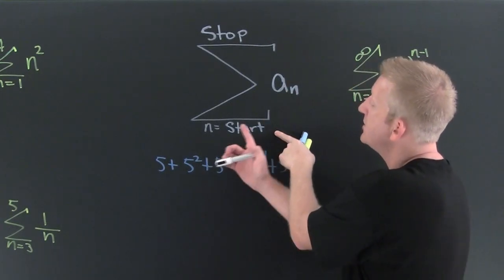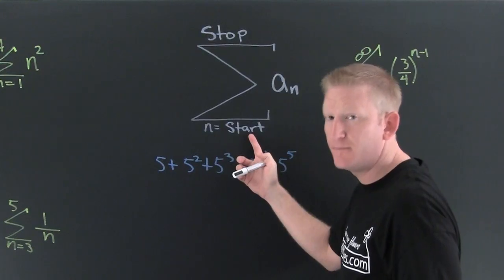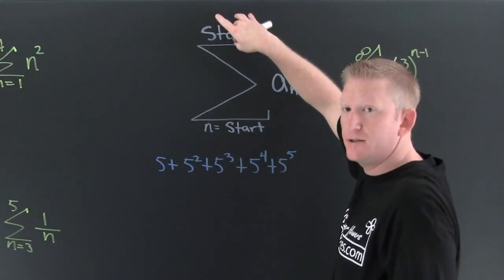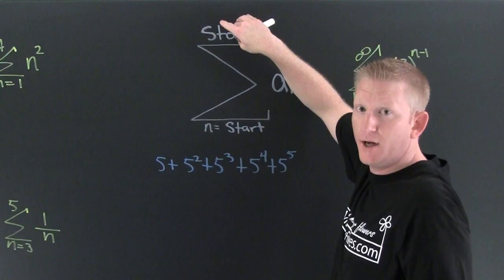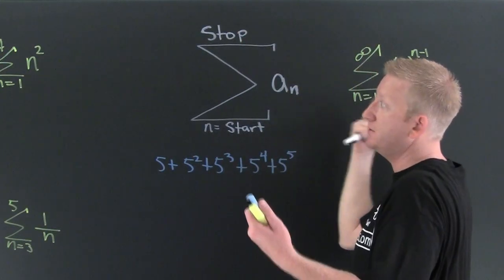More parts about this summation notation. This bottom number down here tells you where to start. It's the index. This top number up here tells you where to stop. So initial value, final value, crank them through. Let's do one.